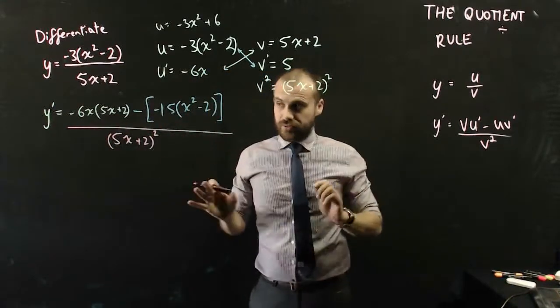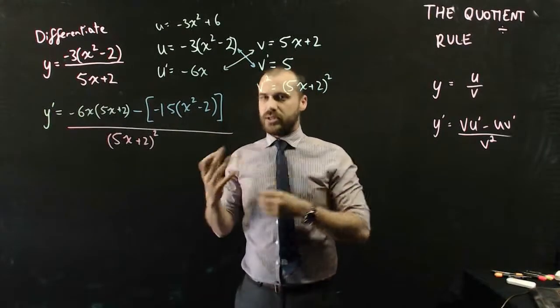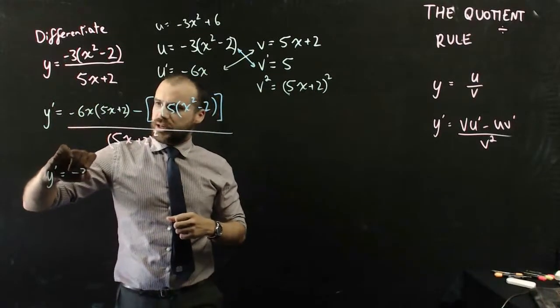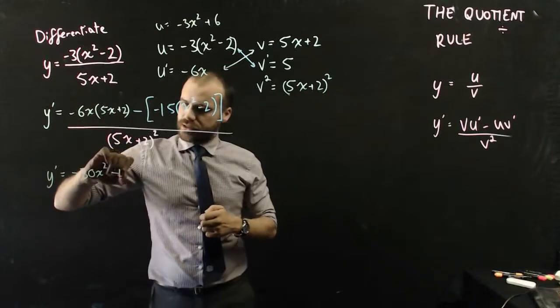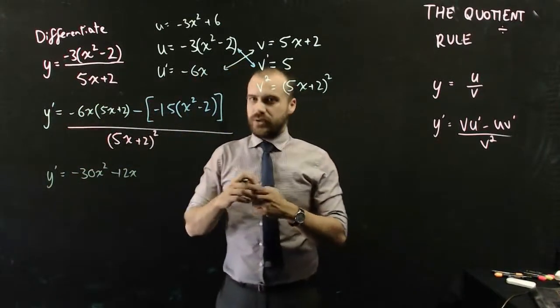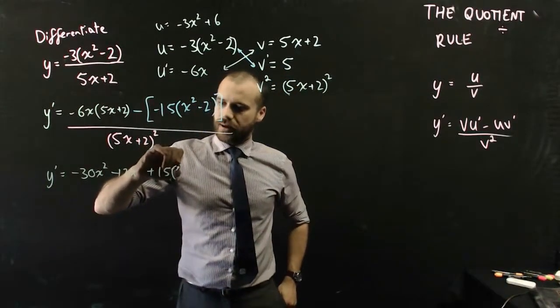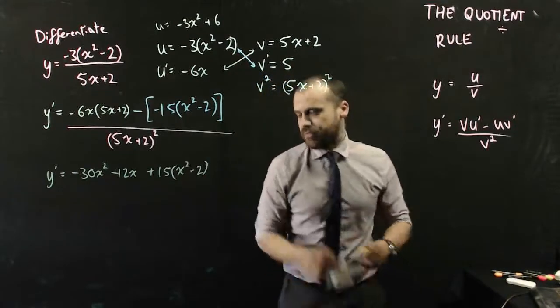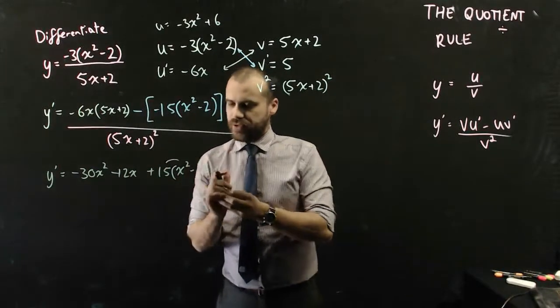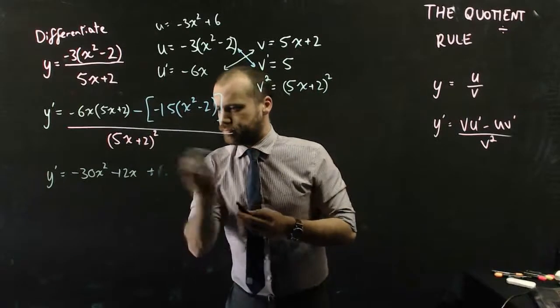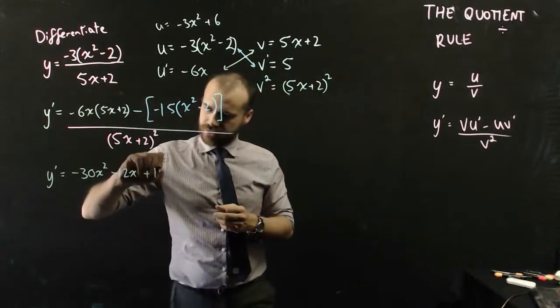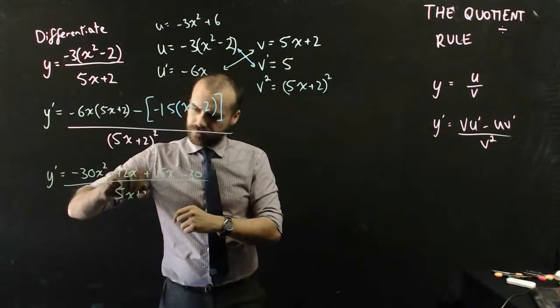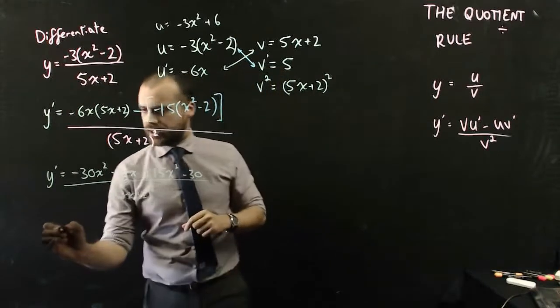All right, that is the derivative. That's kind of the end, but we can obviously sort of play with it, make things a little bit neater from here. But everything from here is just kind of busy work. So, y dash is equal to, I can expand that. So, that's like negative 30x squared minus 12x. Now, it's going to be minus minus 15, which is positive 15. Now, I'll just do it in one step. So, I've done it, but it's going to make my life easier if I now expand that. So, that's going to be 15x squared and it's going to be negative 30. Plus 15x squared and negative 30. And all of that is over (5x plus 2) squared. And I'm not expanding the bottom. It doesn't really make it any neater.